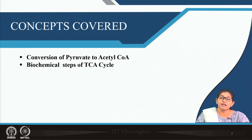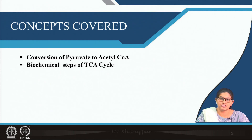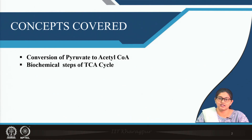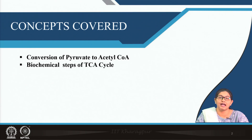Acetyl coenzyme A is the form by which pyruvate from glucose — as well as acetyl coenzyme A formed from different fatty acids or some amino acids — enters the TCA cycle. So formation of acetyl coenzyme A is required.